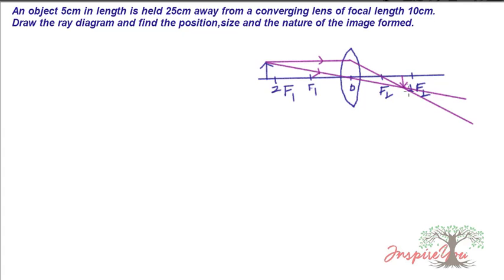Since the object is placed beyond 2f, the image will be diminished, real, and inverted. Let us now verify this mathematically to find the exact position and size of the image.